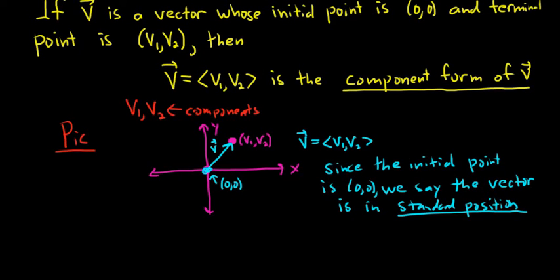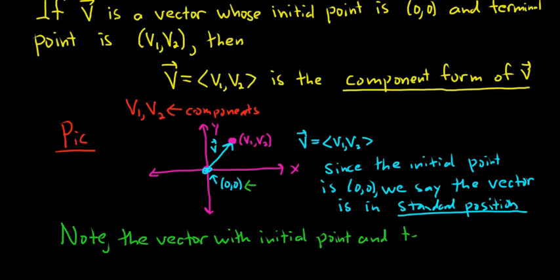Just a quick aside, or just another remark actually. The vector with initial point (0,0) and terminal point (0,0) is called the zero vector. So note the vector with initial point and terminal point (0,0). So the initial point is the same as the terminal point, and they're both (0,0), is called the zero vector. It's a very important vector in Calculus 3 and in mathematics. It's called the zero vector.